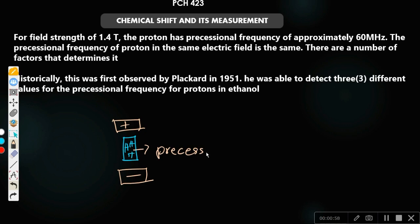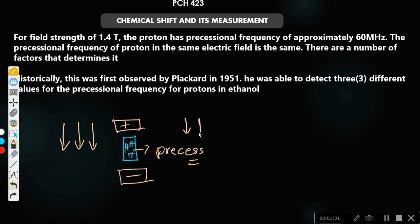They spin — they behave like a spinning top. They precess in such a way that some will align with the field while others will align against the field. The field goes from the positive direction toward the negative. Some protons align with the field — these are low energy — while others align against the field — these are high energy.